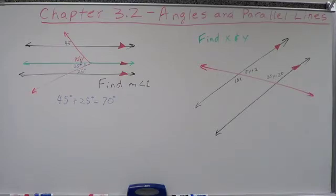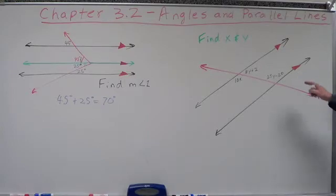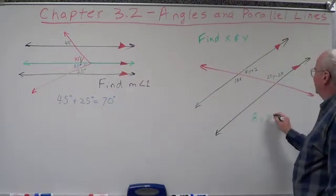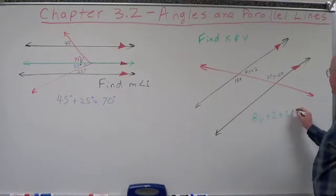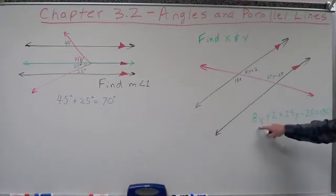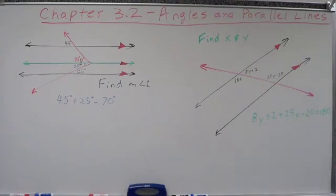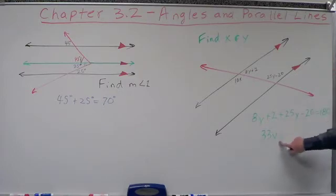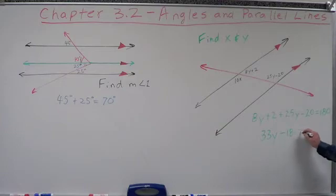What do we know about same side interior angles? Look at your chart — same side interior angles of parallel lines are supplementary. So we add them together and set them equal to 180. Combining like terms: 8Y + 2 and 25Y − 20. That gives us 33Y − 18 = 180.